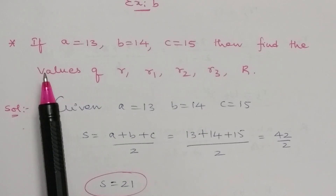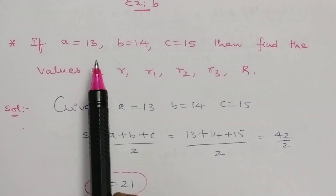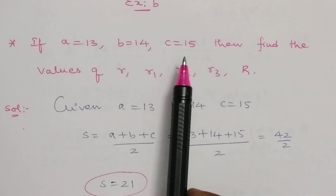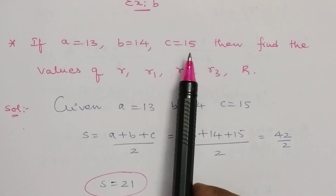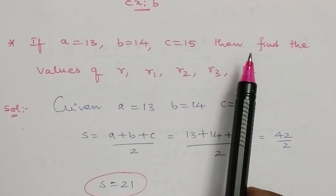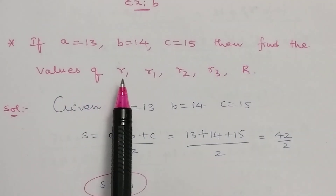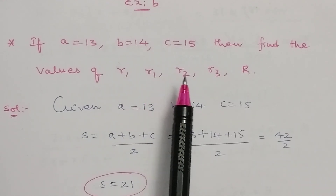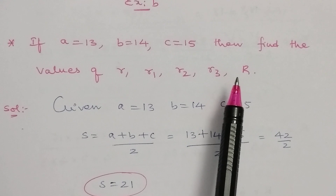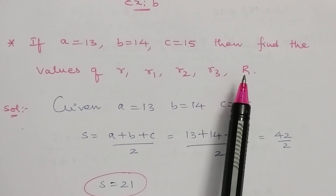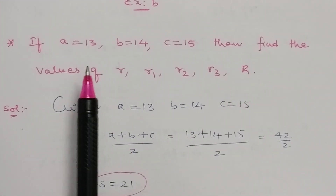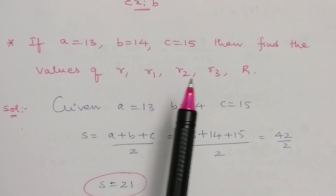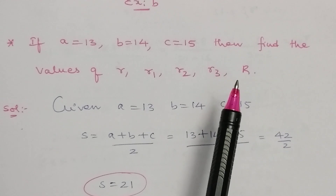If a equals 13, b equals 14, c equals 15, then find the values of small r, r1, r2, r3, and capital R. What are all these — a, b, c and small r, r1, r2, r3 and capital R?